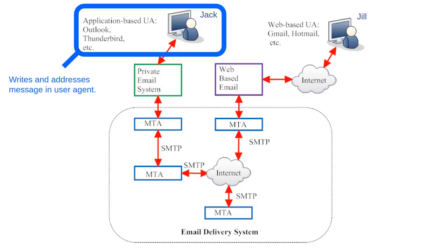Jack will begin by writing and addressing the email using what is called a user agent. In Jack's case, his user agent is an email application that lives on his own computer. Examples of such applications include Microsoft Outlook or Mozilla's open-source Thunderbird email application. These applications are compatible with private email systems, like the one that Jack uses. Most people don't use private email systems for their personal emails anymore, so you may not be familiar with them.